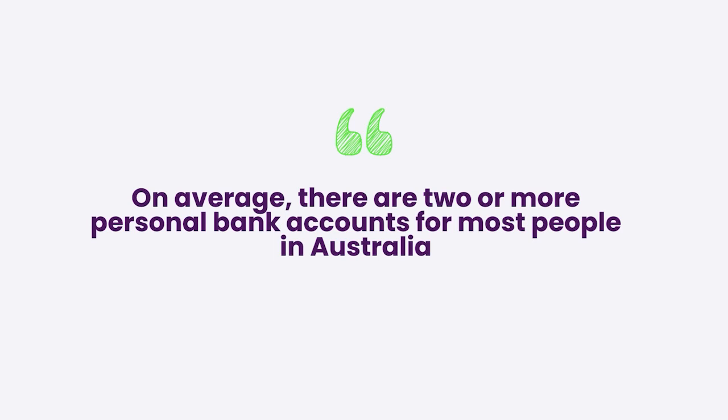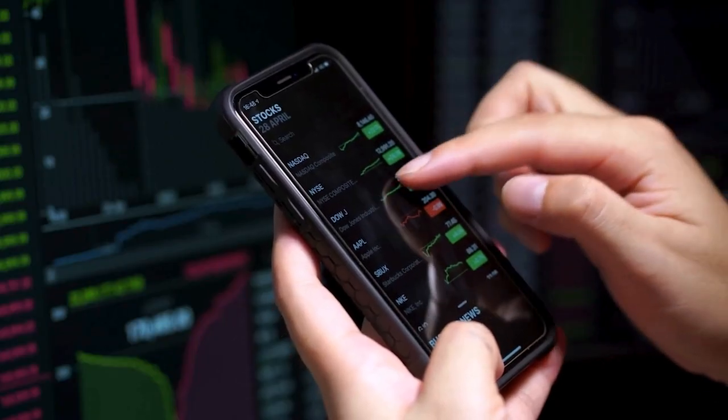Did you know that on average there are two or more personal bank accounts for most people in Australia? So if you think about that, that's a lot of transactional accounts, offset accounts, term deposit accounts, and savings accounts. Some people follow the Barefoot Investor and have multiple sub savings accounts for holiday funds, slush funds, weddings, Christmas, and emergency funds. And when you combine that with share trading accounts, and some people have businesses with lots of different business accounts, it's really hard to get a central view of where your money is.